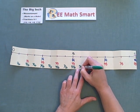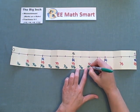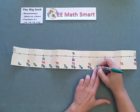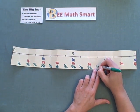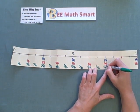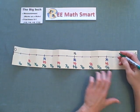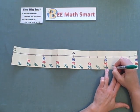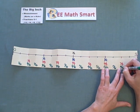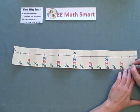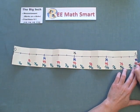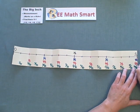Nine sixteenths, ten sixteenths equals five eighths, eleven sixteenths, and twelve sixteenths, which you can see is equal to three quarters or three fourths depending on how you say it. Thirteen sixteenths, fourteen sixteenths equals seven eighths, fifteen sixteenths, and last but not least, sixteen sixteenths equals a whole.